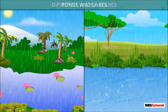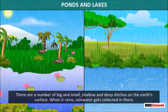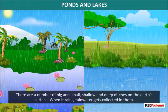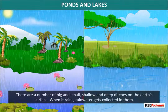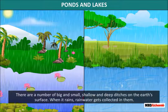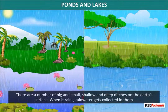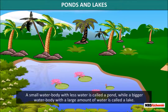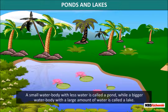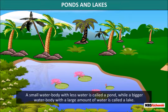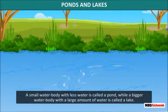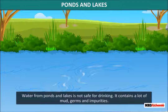Ponds and lakes: There are a number of big and small, shallow and deep ditches on the earth's surface. When it rains, rainwater gets collected in them. A small water body with less water is called a pond, while a big water body with a large amount of water is called a lake. Water from ponds and lakes is not safe for drinking. It contains a lot of mud, germs and impurities.